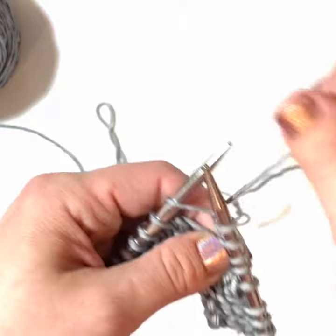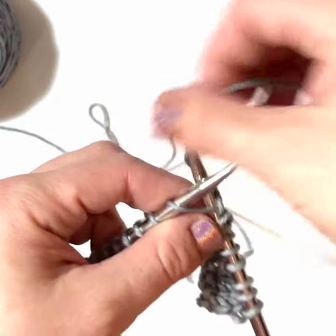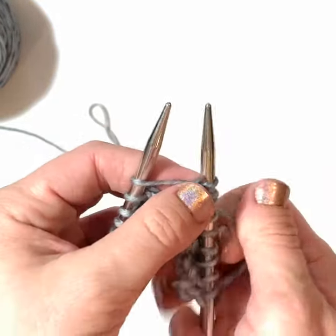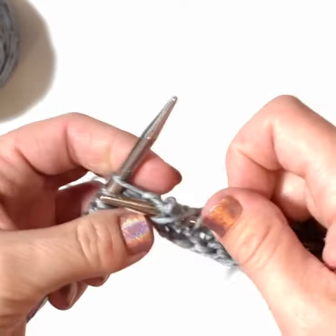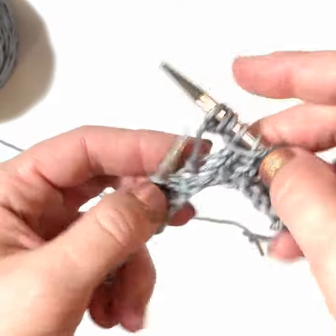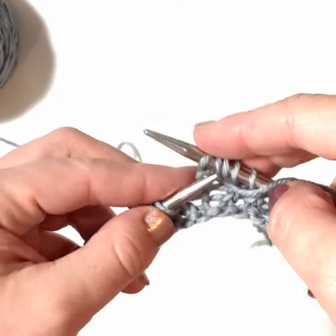Bring the yarn to the back, knit into that stitch, do not take it off. And then bring the yarn to the front, purl into that stitch, and now you can take it off of the left hand needle. Then you're going to bind off the second, third, and fourth stitches.